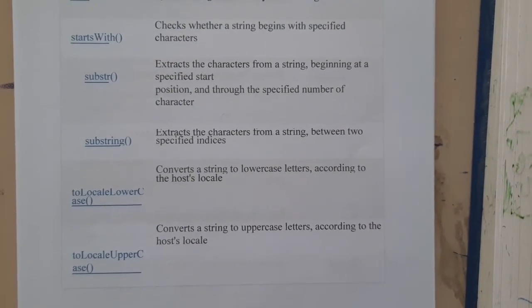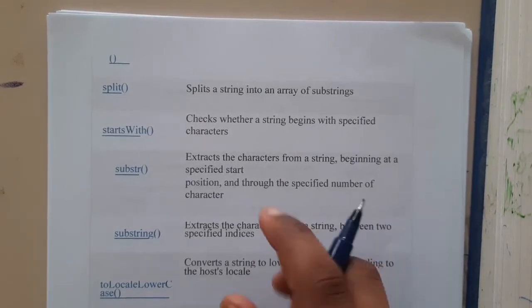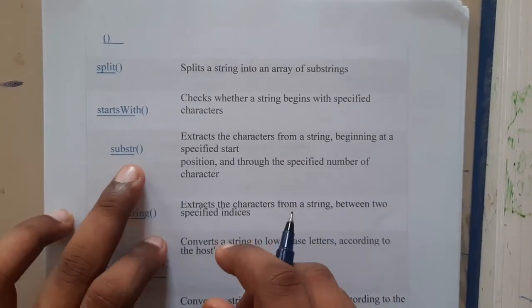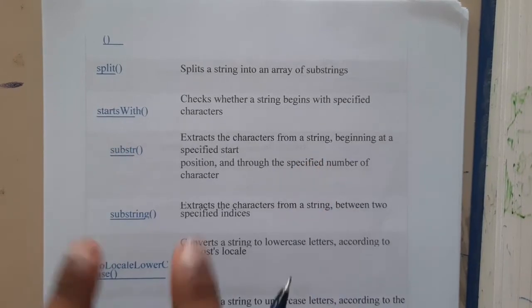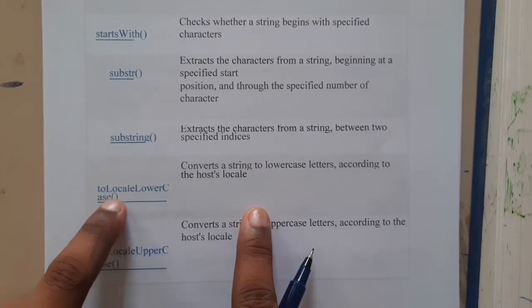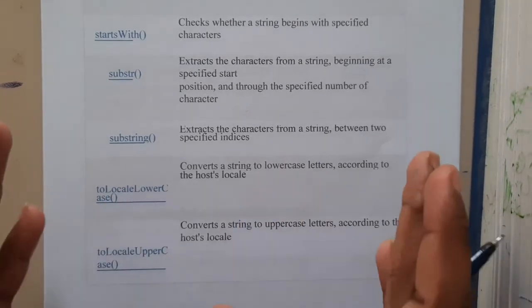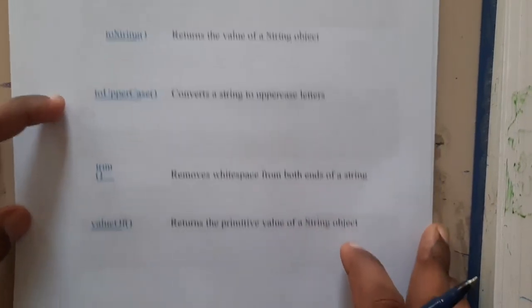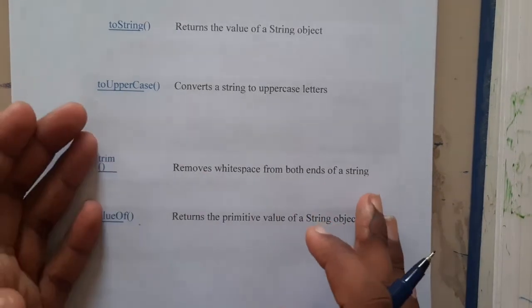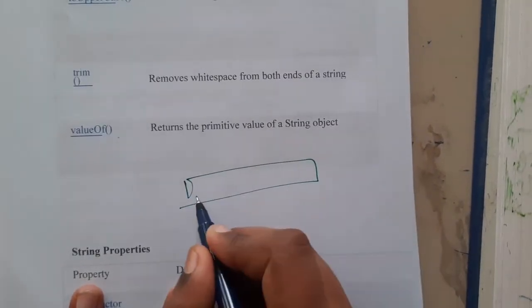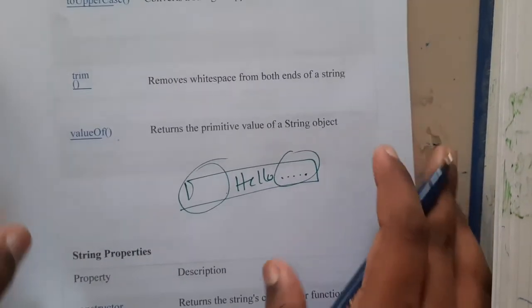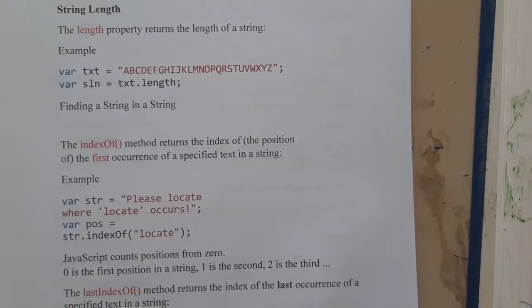`split` breaks a string into substrings. `startsWith` checks whether the string starts with a particular character. `substring` lets you specify a start and end position and returns that portion. `toLowerCase` converts the whole string into lowercase, and `toUpperCase` converts it into uppercase. `trim` removes any empty spaces at the start or end of a string — for example, spaces before and after 'hello' would be removed.